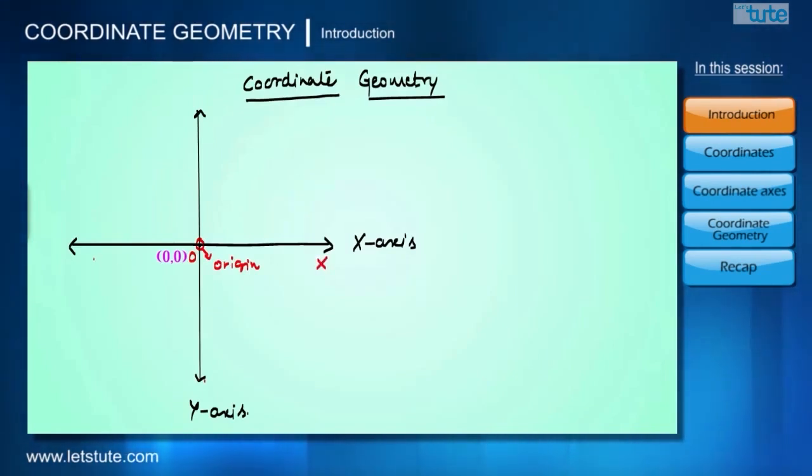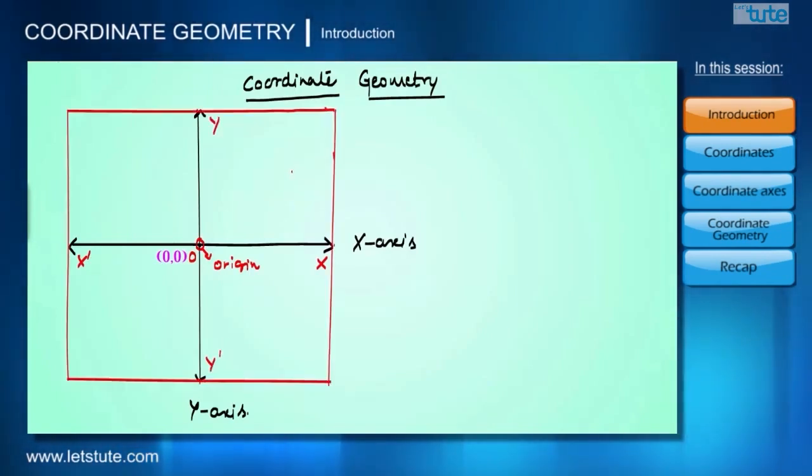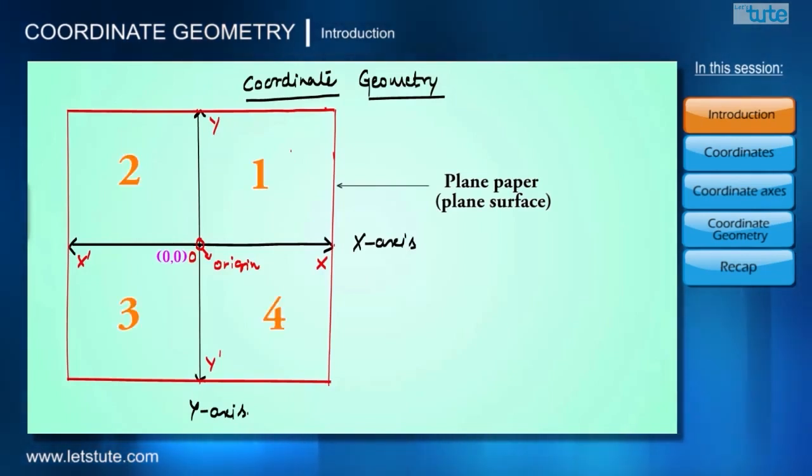X axis is named as XX' and Y axis is named as YY'. When these two axes are drawn in this way on any plane or paper, it divides that plane into four equal parts.